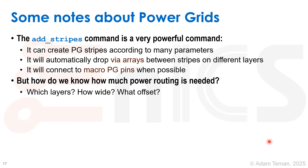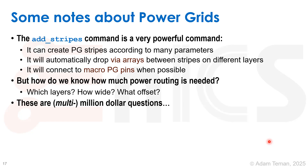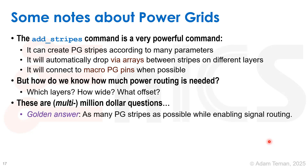These are multi-million dollar questions - there is not a perfect answer here. The golden answer is you want to have as many PG stripes as possible while still enabling signal routing. You don't want to cause congestion because you filled up your whole layer with power and ground stripes. The more power-ground stripes you put on, you'll get better IR drop and better electromigration, but you won't have as much room to use routing resources for your signals. They say the blanket is very short - you can only pull from one side.